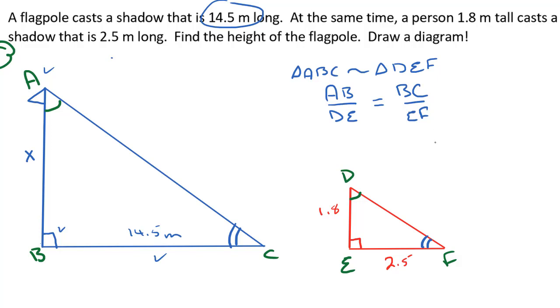So let's plug in what we know. We know that AB is X. We know that DE is 1.8. We also know that BC, the shadow of the flagpole, is 14.5, and the shadow of the person is 2.5. Now we can cross multiply, and we're going to get 2.5X equals 1.8 times 14.5.